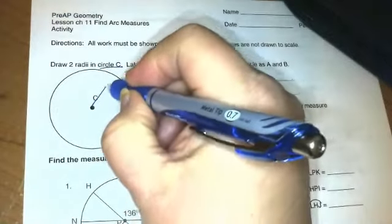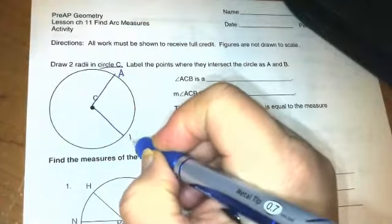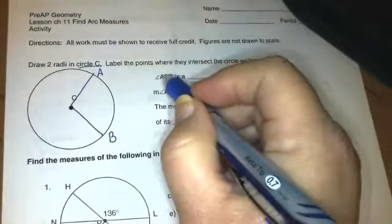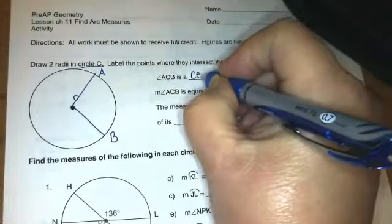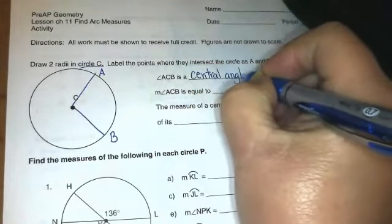Remember when they call it circle C, C is the center of the circle. So I'm going to draw a radius called AC and I'm going to draw another radius called CB.